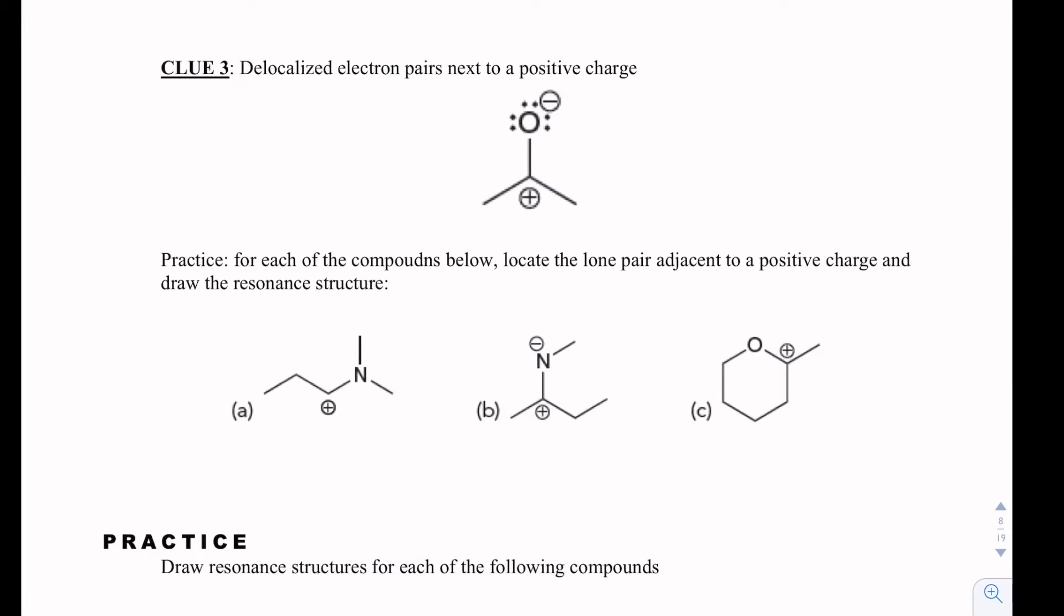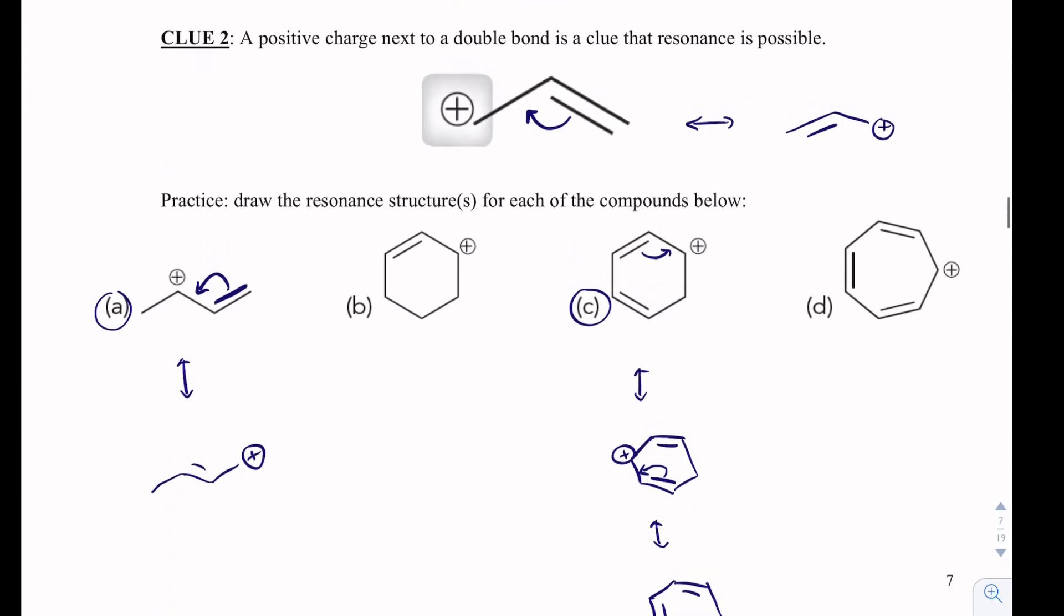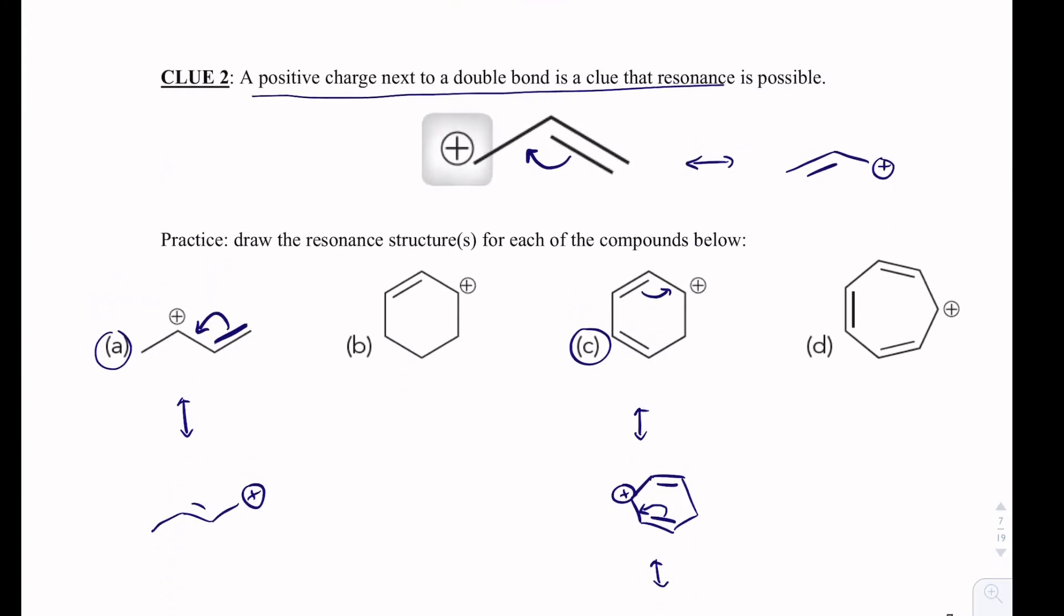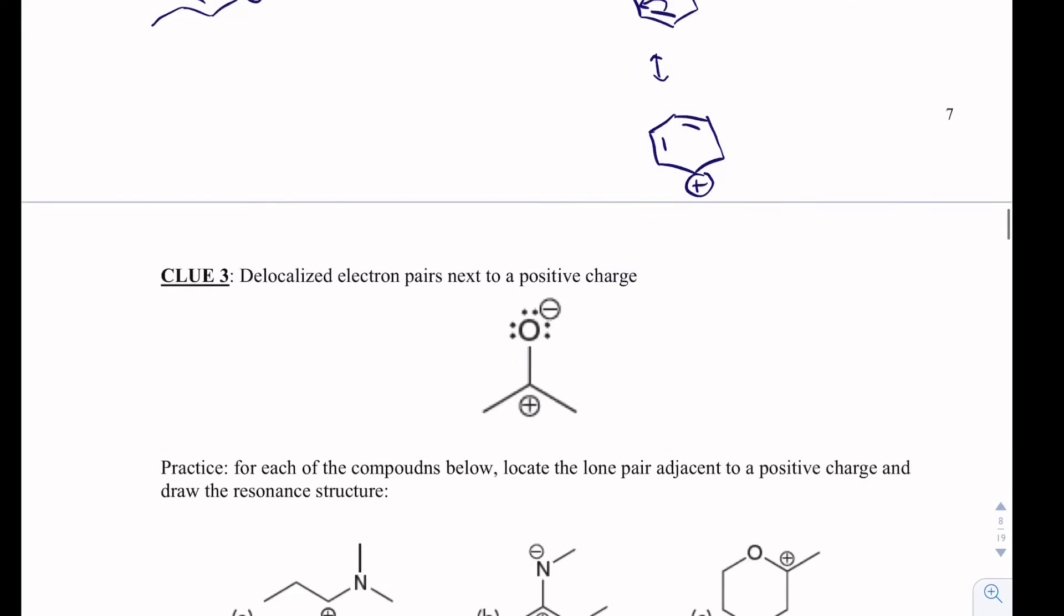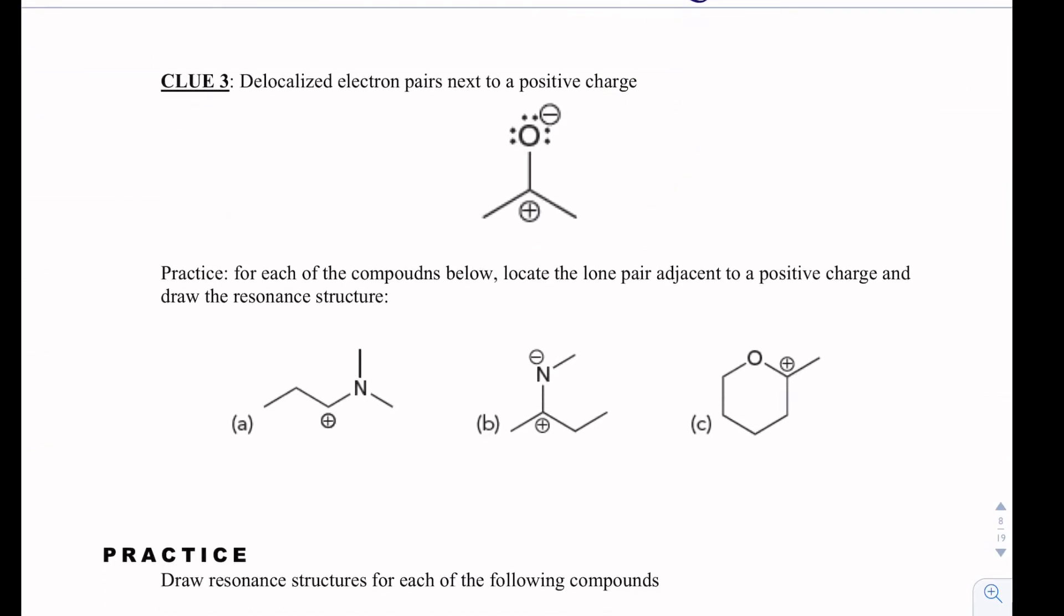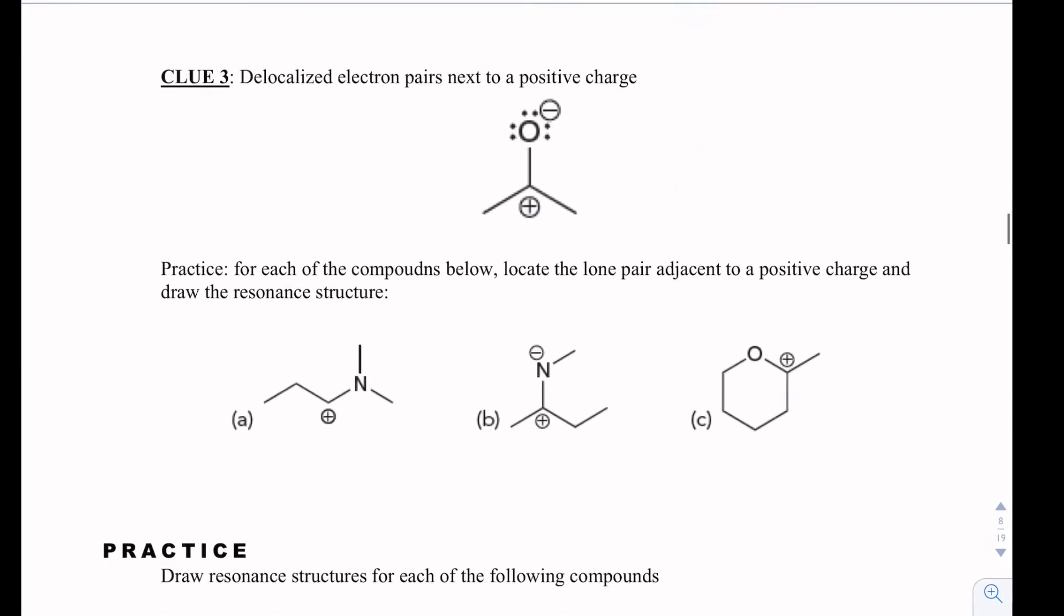Another clue is that we could have delocalized electron pairs next to a positive charge, which is very similar to here. Double bonds are delocalized electrons, but this is specifically lone pairs I'm talking about. So what we could have is something like this in A, where these go and create a double bond there. And when you do formal charge, it checks out. Nitrogen becomes positive with four bonds but zero lone pairs, and that matches our rule of getting to four.